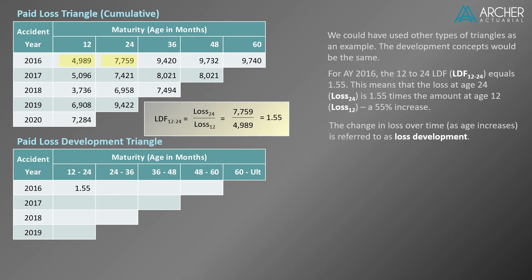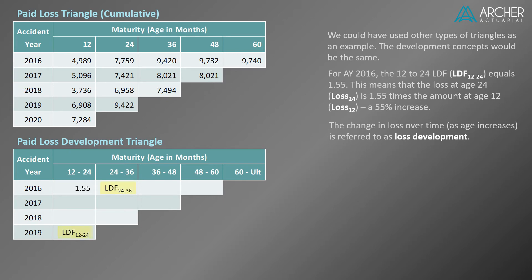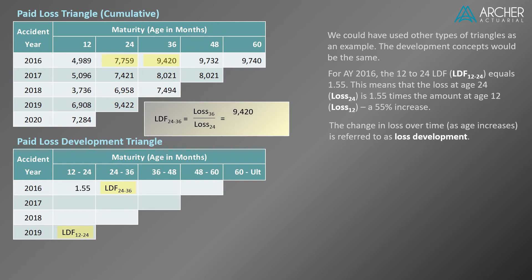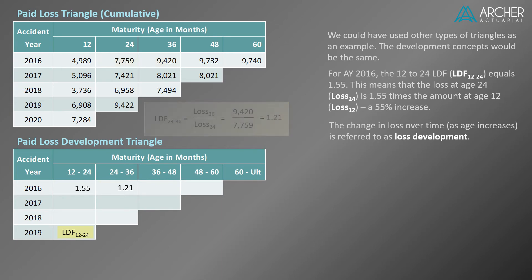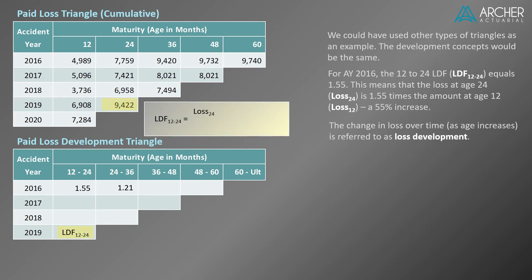The change in loss over time as age increases is referred to as loss development. Let's quickly go over the calculations for two more LDFs. The 24 to 36 LDF for accident year 2016 is the ratio of the loss at age 36 to the loss at age 24. This equals 9,420 divided by 7,759, or a factor of 1.21. The 12 to 24 LDF for accident year 2019 is the ratio of the loss at age 24 to the loss at age 12. After a bit of arithmetic, we calculate a factor of 1.36.